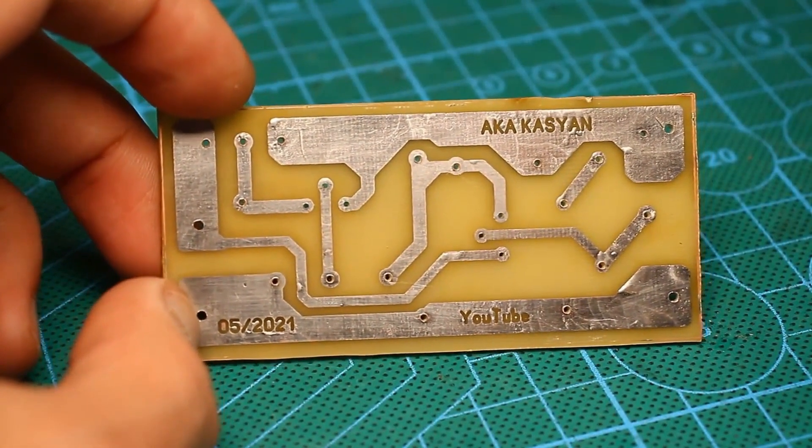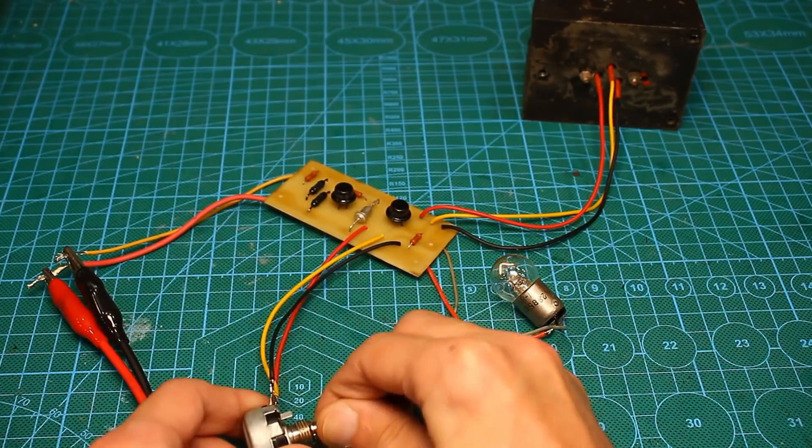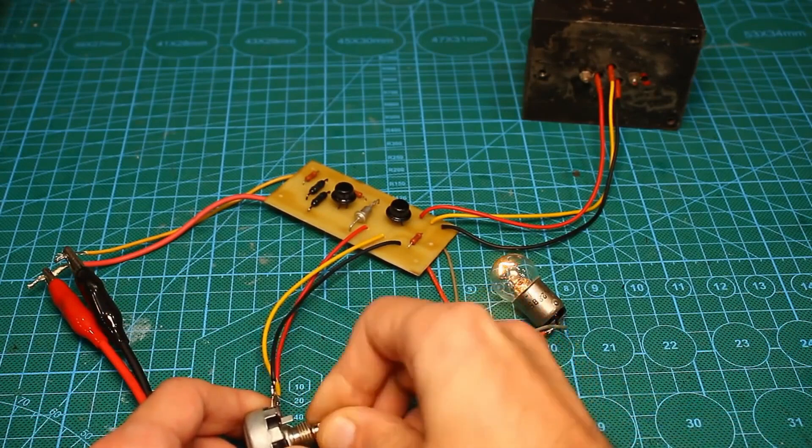The board is simple and can be made at home on the fly. The input voltage of the circuit is 20-24 volts, and the output is 12-14. But by replacing the Zener diode with a higher voltage one, you can increase the output voltage.